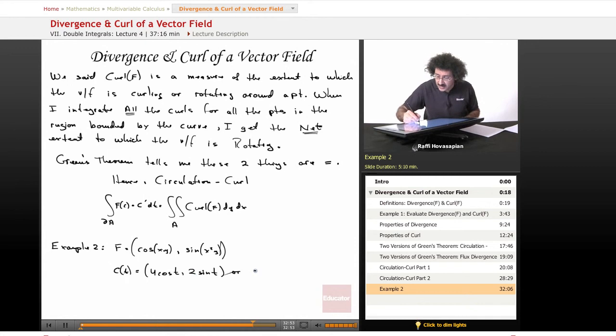Or if I write it in Cartesian coordinates, it'll be x squared plus 4y squared equals 16. So this is just two different ways of representing the same thing. This is the parameterized version, this is the Cartesian version.